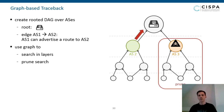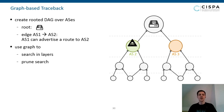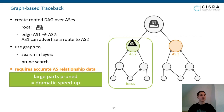This pruning gives a dramatic speedup. The slight downside is that it requires accurate AS relationship data, but there are quite good approximations already available, for example from CAIDA.